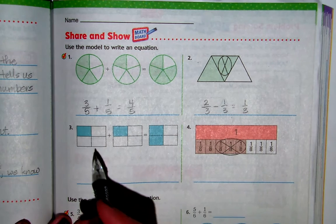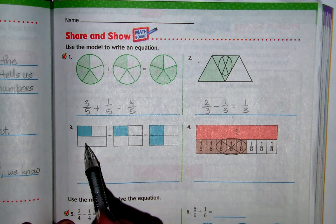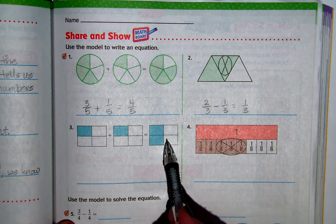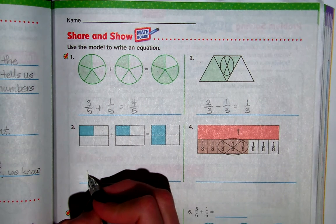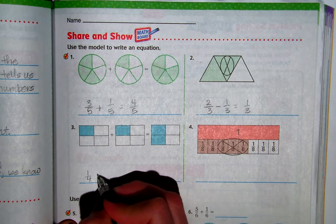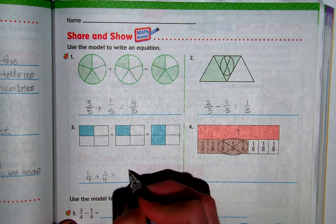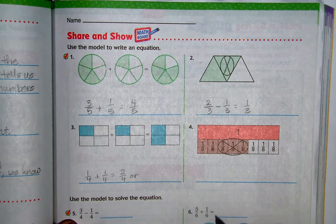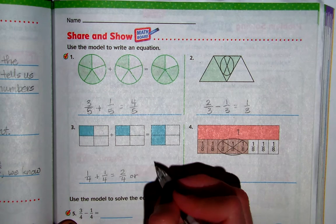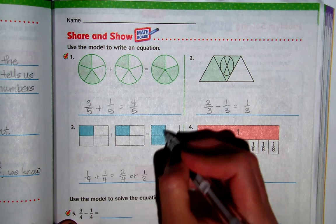Number 3. 1, 2, 3, 4. Each of these, each of these, each of these models are divided into fourths. And so this is 1 fourth plus 1 fourth equals 2 fourths. And if we were to simplify that, this can also be written as 1 half. And you can see that really easily right there, can't you?